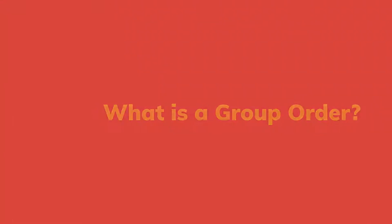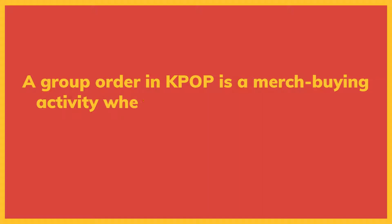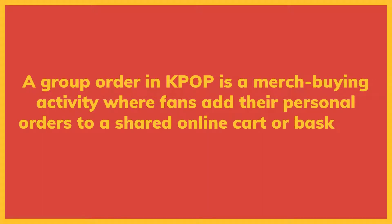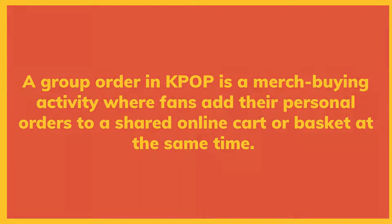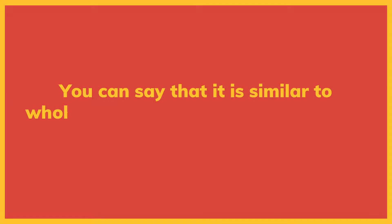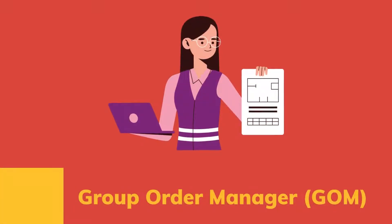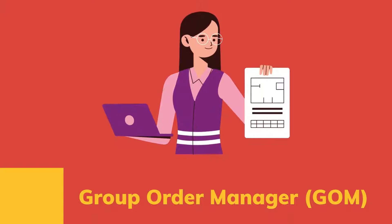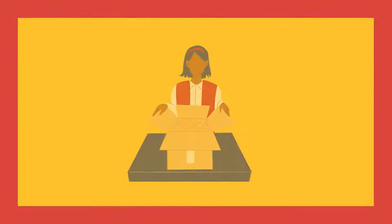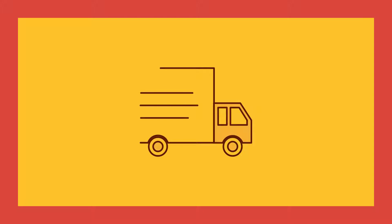What is a group order? A group order in K-pop is a merch buying activity where fans add their personal orders to a shared online cart or basket at the same time. You can say that it is similar to wholesale buying to save shipping and import costs. It is organized by a group order manager who handles the buying of merchandise from the online store, collecting payment, packaging, and shipping of the items locally.